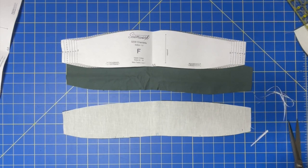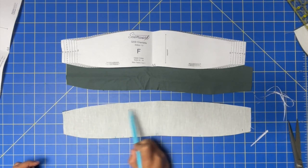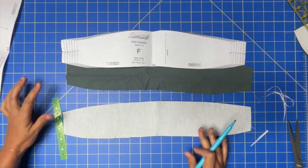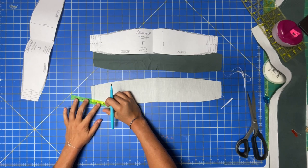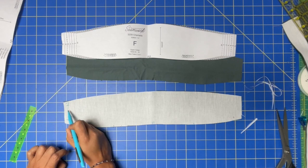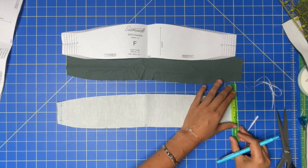We're going to do three-eighths seam allowances. I'm going to get my handy-dandy five-eighths inch ruler, and we're going to mark the stopping and starting point here, and we're going to mark our pivot points. So now I know to start here, pivot here, come all the way around, and we're going to pivot on the other side too.